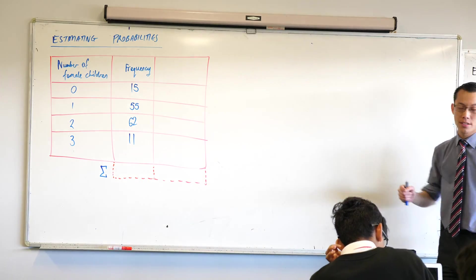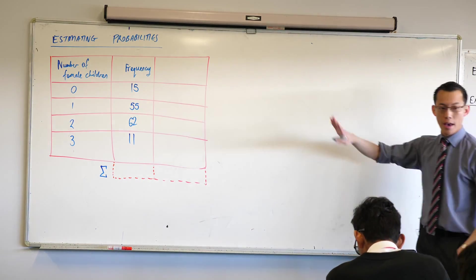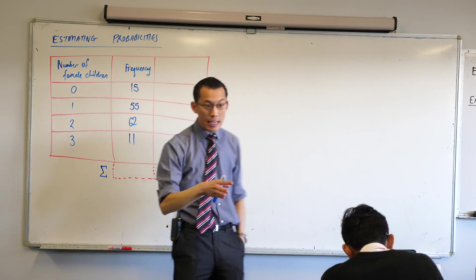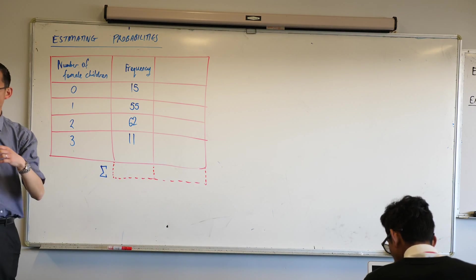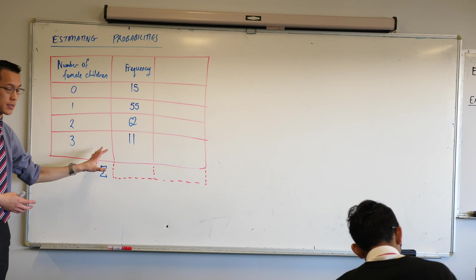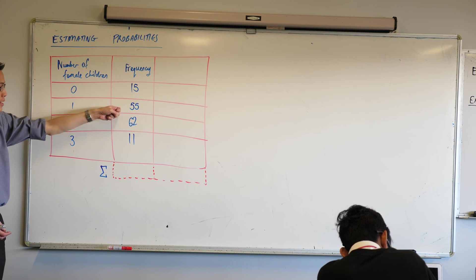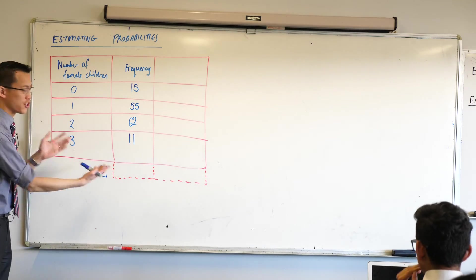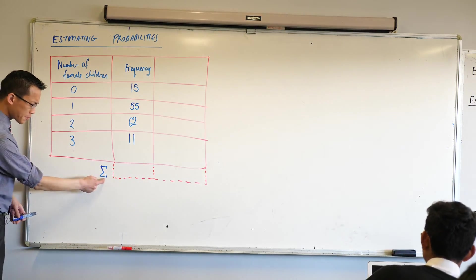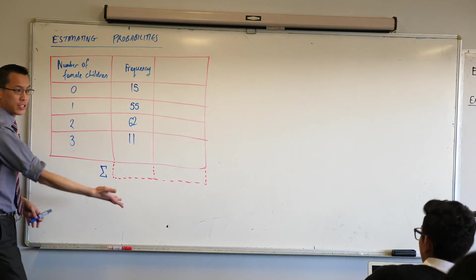Here's a situation where they've done some analysis of families and how many female children are in each of these families. We have a frequency breakdown here. In order to work out probabilities from this, what we need to do is take each of these and turn them into a fraction which divides by your total sample space. In this case, we can add up all of these to get a total.